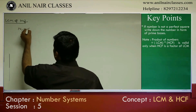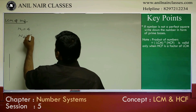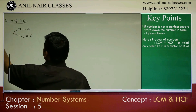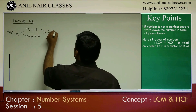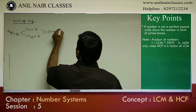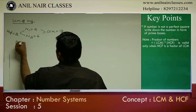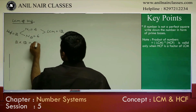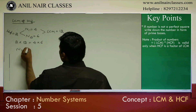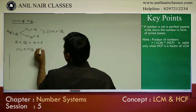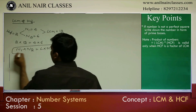If I take two numbers, N1 is 4 and N2 is 6, the highest common factor will be 2, and LCM of 4 and 6 will be 12. So 2 into 12 equals 4 and 6. Most textbooks make this mistake — they write N1 into N2 equals LCM into HCF.